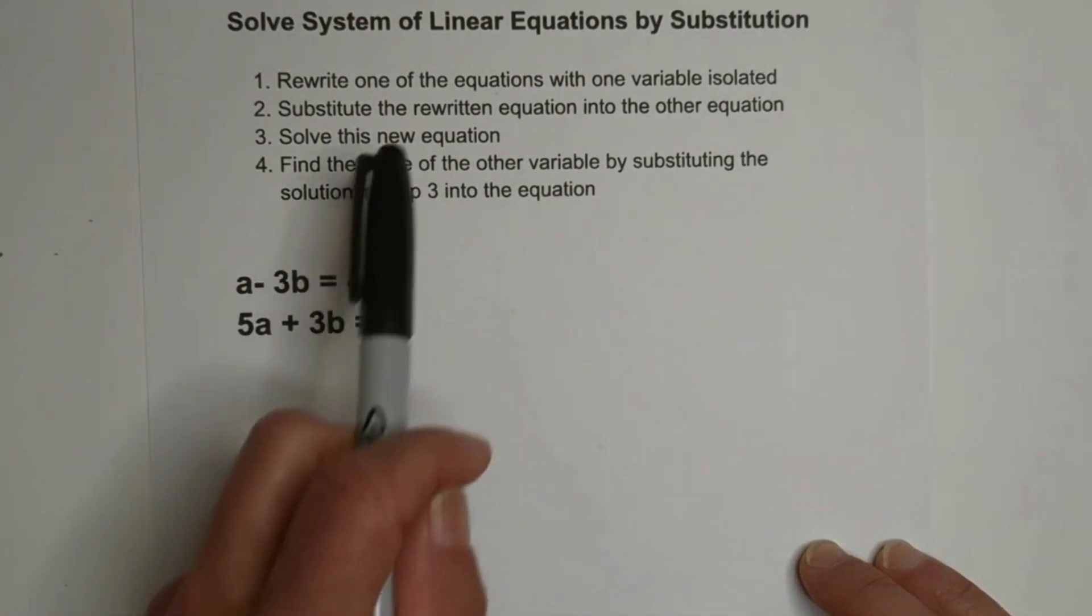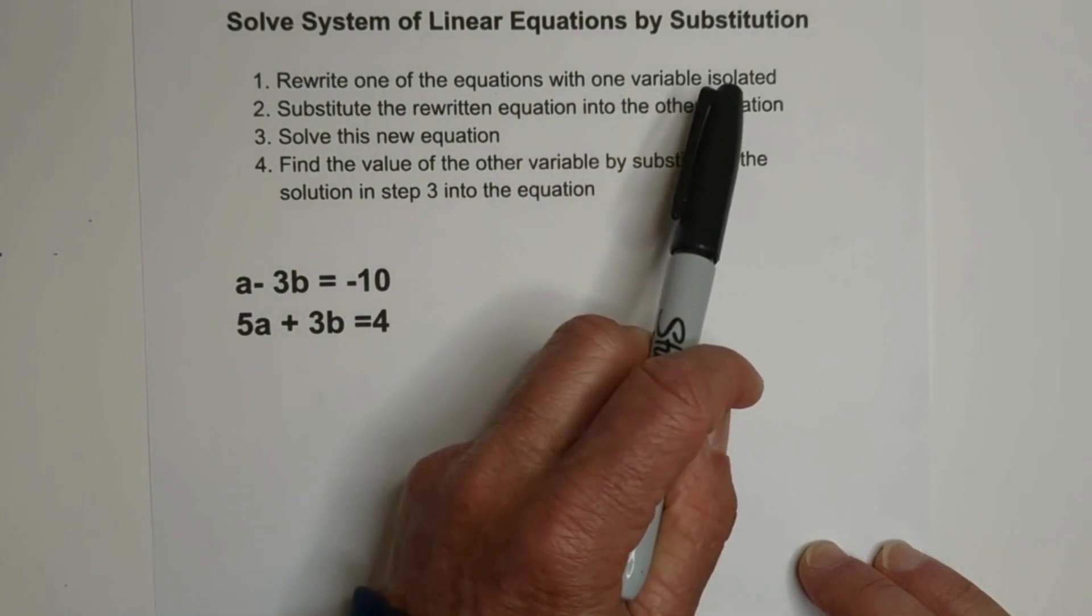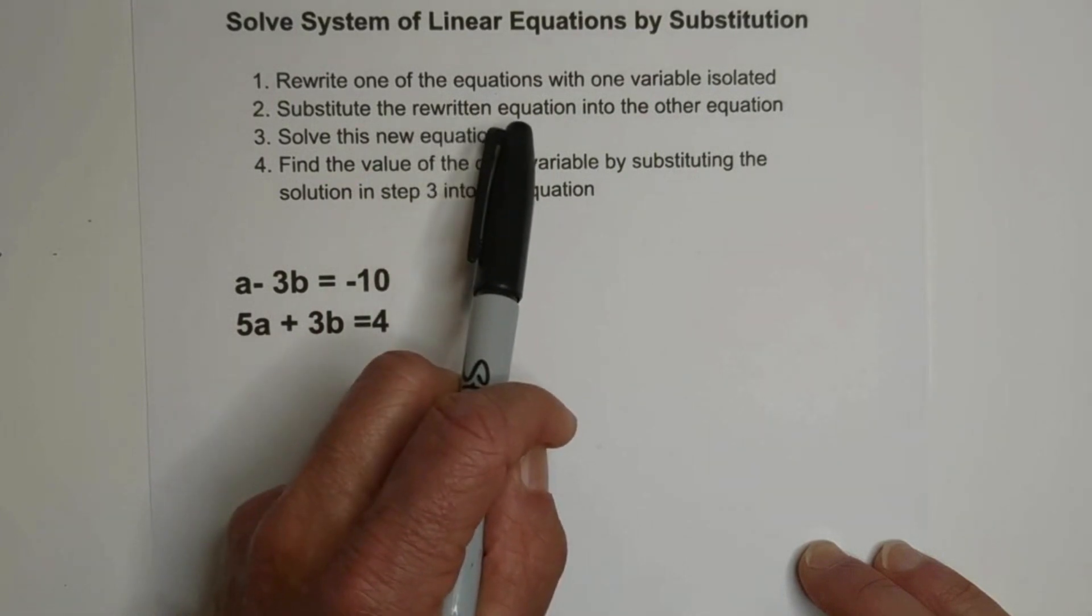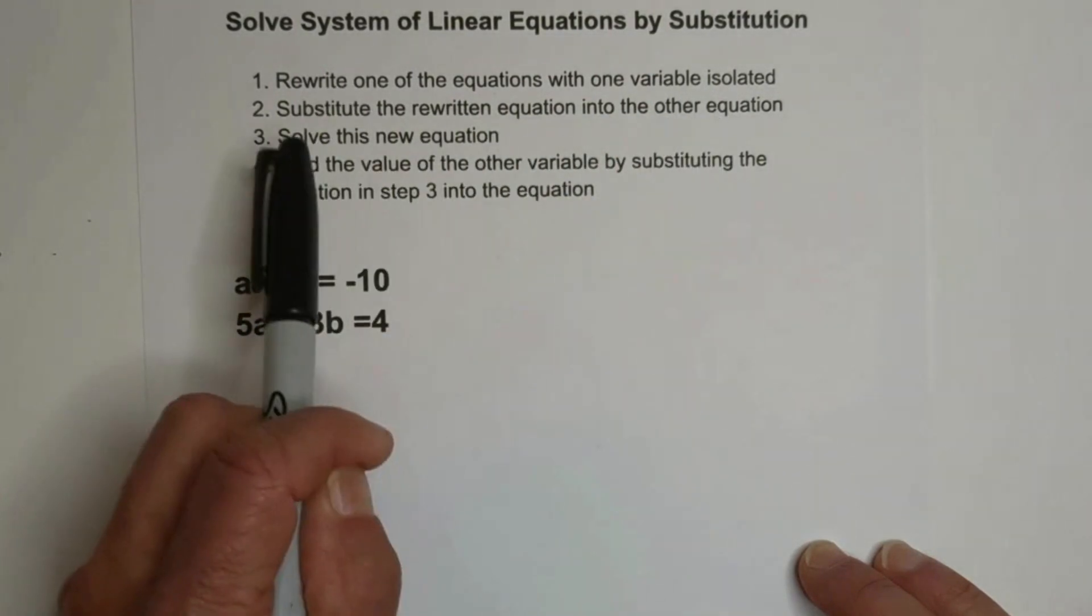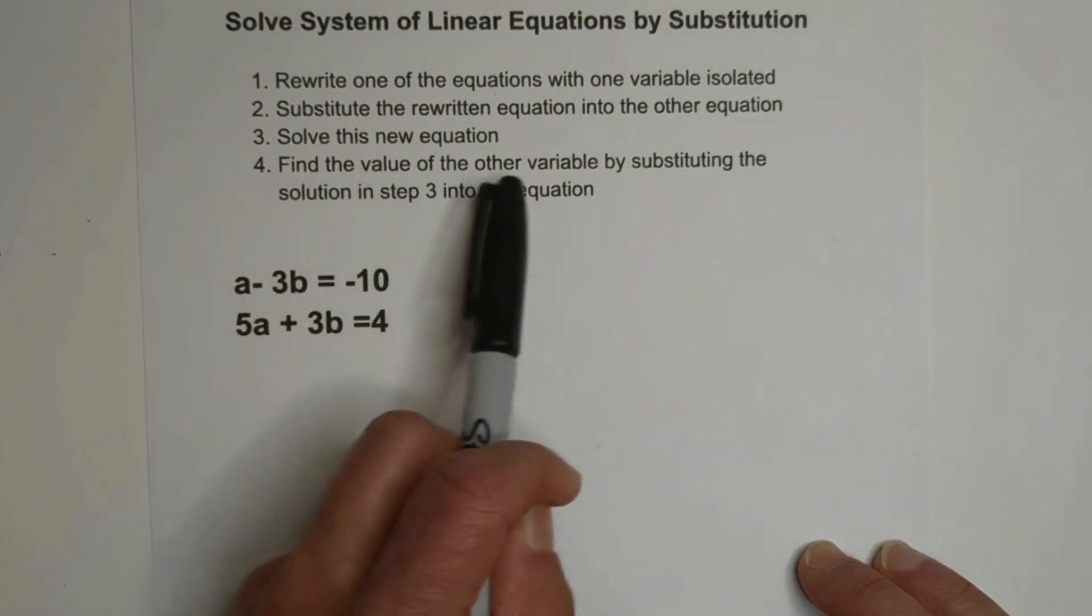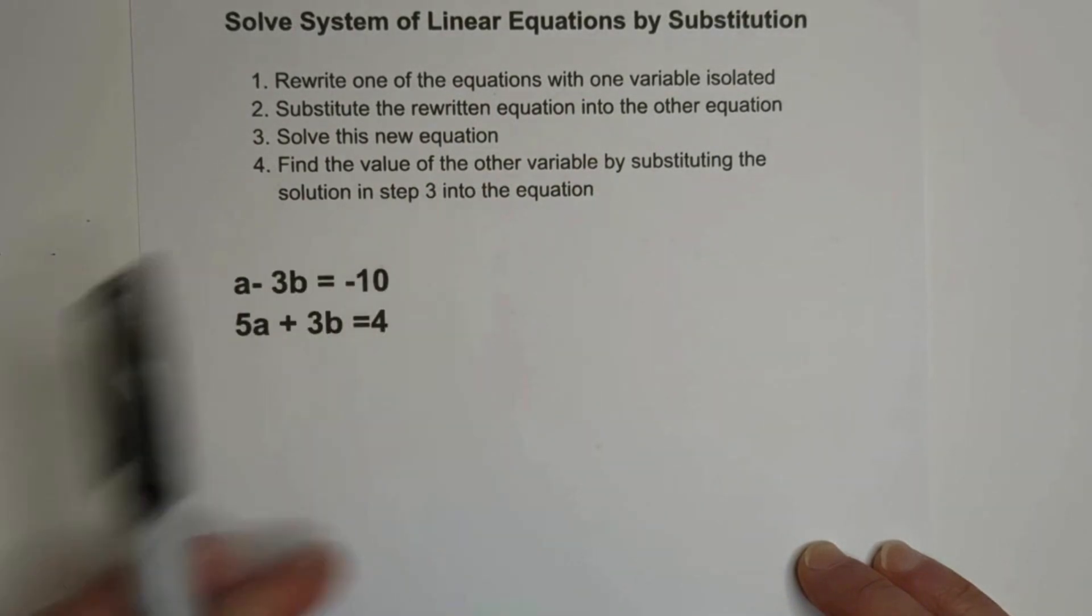Here are the steps we're going to follow. We're going to rewrite one of the equations with one variable isolated. Then we're going to substitute the rewritten equation from step one into the other equation. Then we're going to solve this new equation. Then we're going to find the value of the other variable by substituting this solution in step three into the equation. So let's get started.